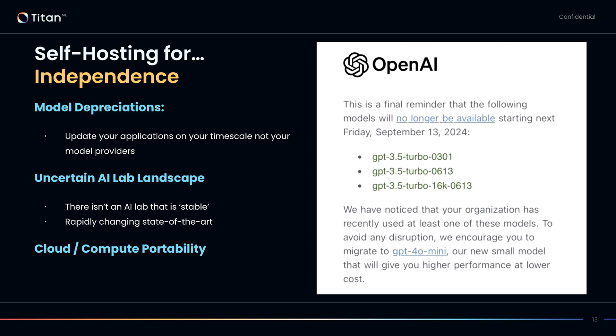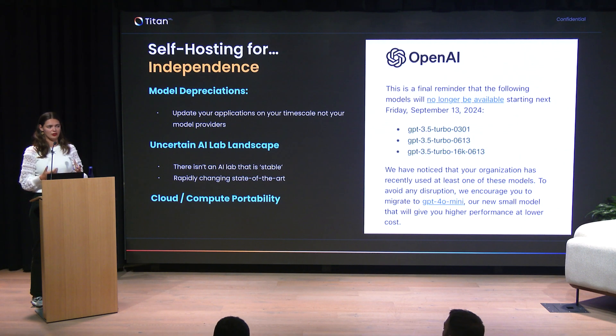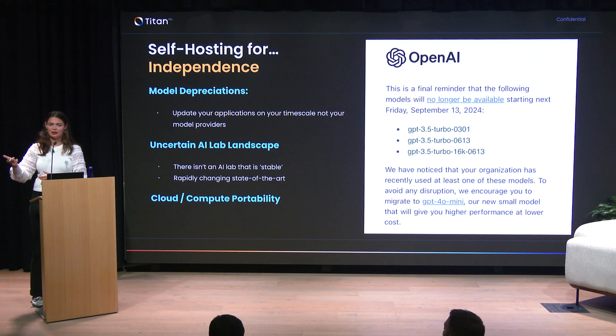The final reason you might want to self-host for independence is cloud and compute portability. Over the last 10 to 20 years, most enterprises have been doing cloud migrations, and for bigger enterprises, part of their cloud strategy has been a multi-cloud environment — not tying themselves to a particular cloud, but treating cloud as essentially a compute layer and moving applications freely between clouds. If you're using a hosted API service, you can't do this — you can't pick up your AI model and move it to another cloud. If you have a multi-cloud or hybrid strategy, self-hosting is essential to maintain that.